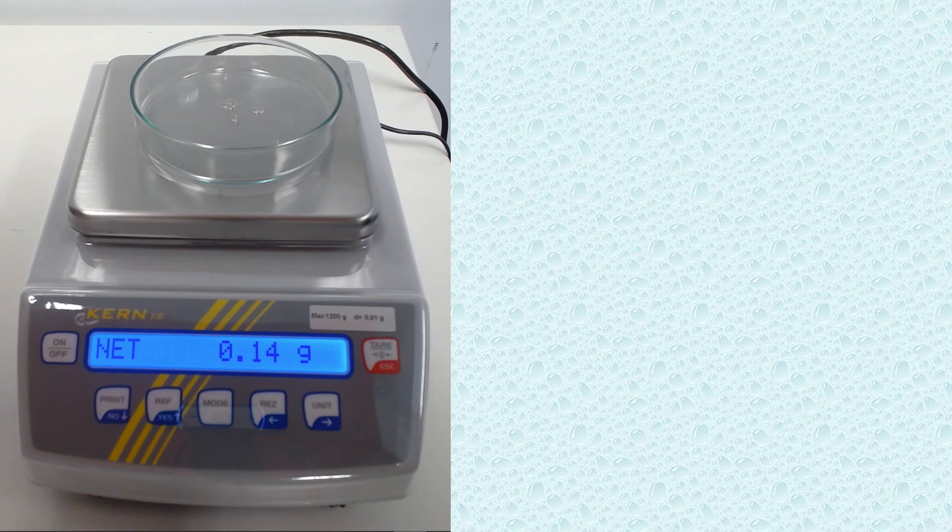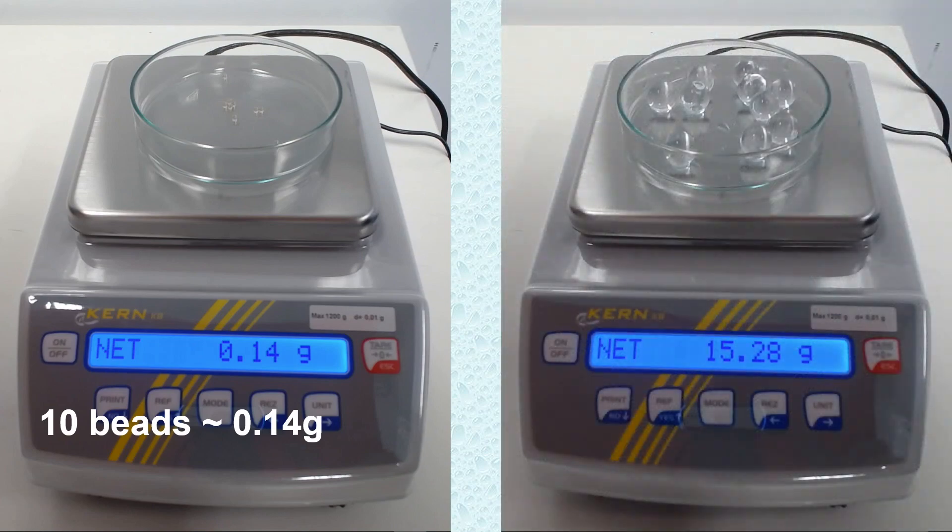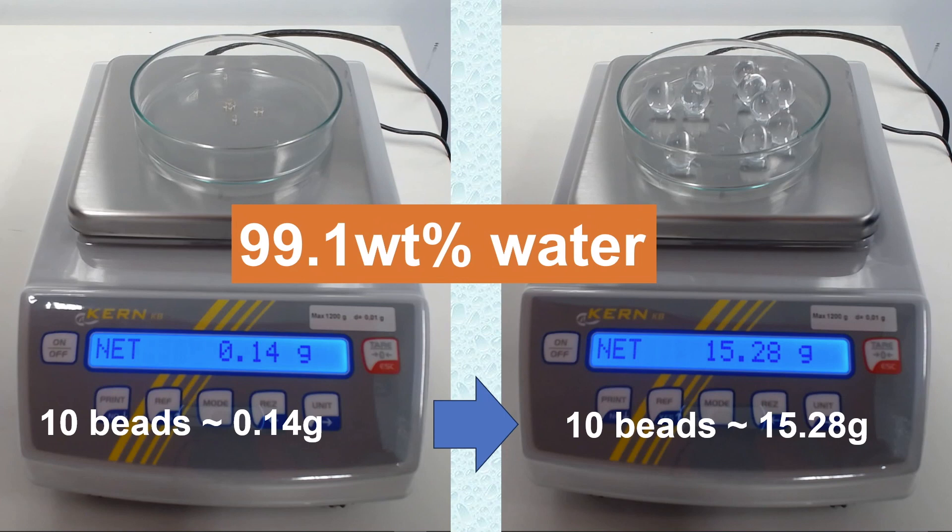What about its weight? At the beginning, 10 beads weigh about 0.14 g. After absorbing water, the weight increased by 100 times to about 15 g for the same 10 beads. This means that 99.1 weight percent of the water beads is water, and only 0.9 weight percent of polymer in it.